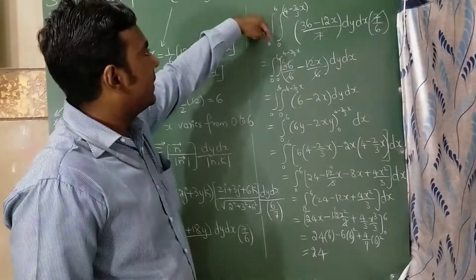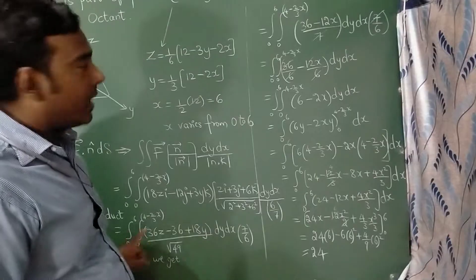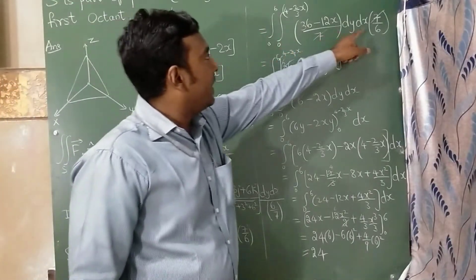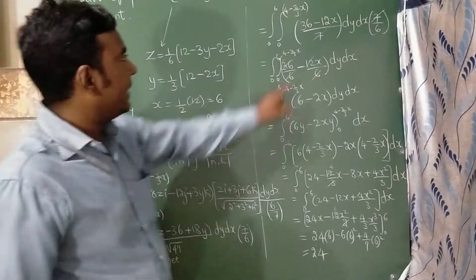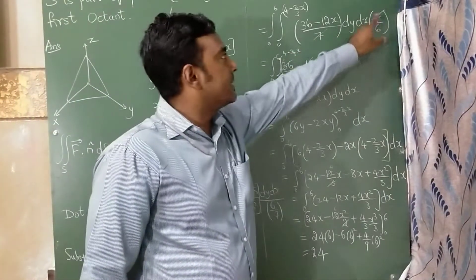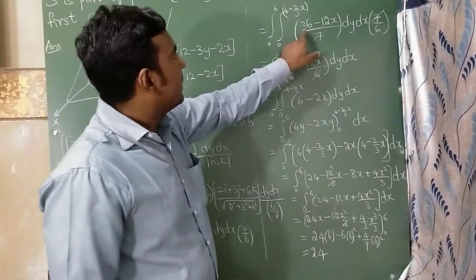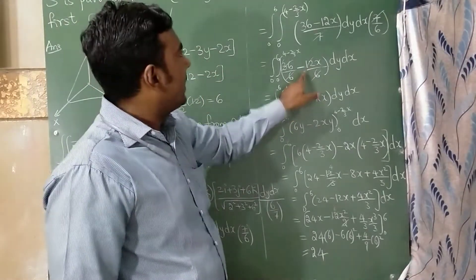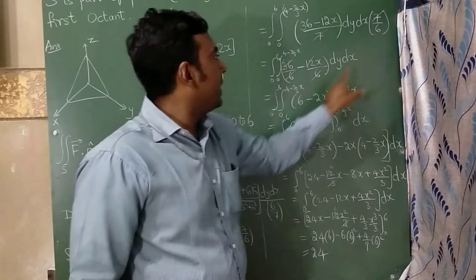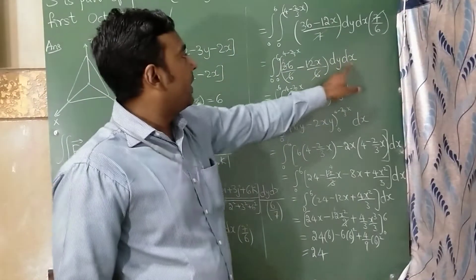Now this integration and the limits, the range I have written here. dy dx, 7 by 6 I have written from here. So root of 49 is 7. This 7 and this 7 get cancelled. Now this 36 I have written divided, minus 12x by 6. dy dx, 36 upon 6 is 6.